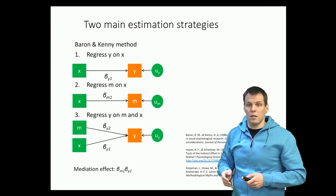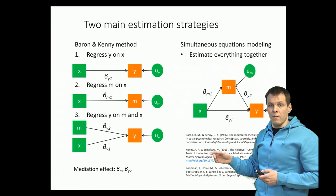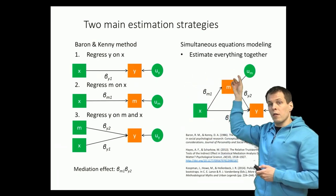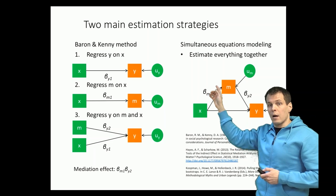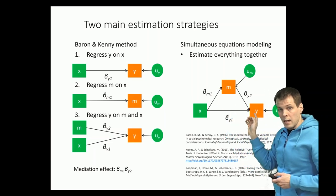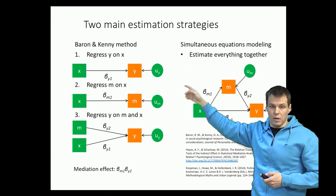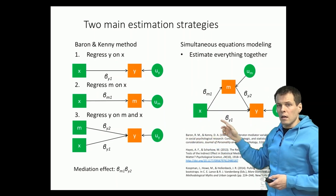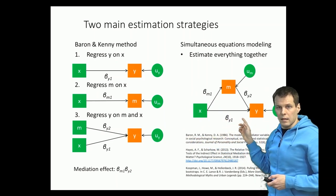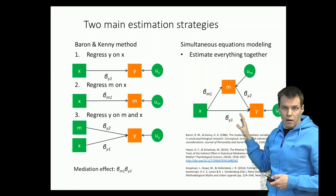Then we have another strategy, which is simultaneous equations estimation. We have this full model here. We have two dependent variables, m and y, and we apply simultaneous equation techniques to estimate everything at once without having to estimate these separate regression analyses. This is slightly more appealing statistically and it's recommended in many books and articles now.